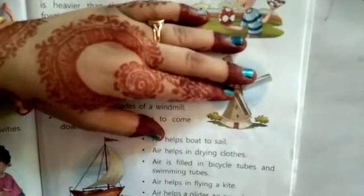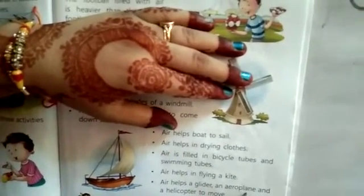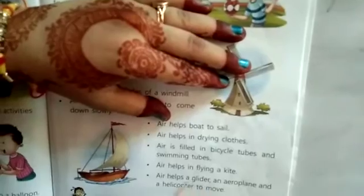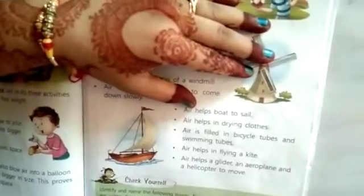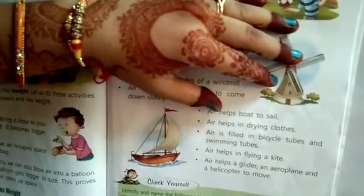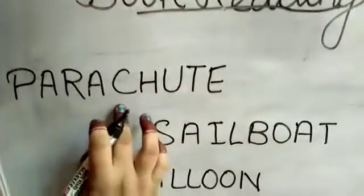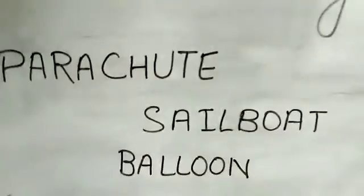Air helps in flying a kite. Air helps a glider, an aeroplane, and a helicopter to move. Next, identify and name the following things — the first and last letter of each are written for you. You can write the spelling: parachute — p a r a c h u t e — and sailboat — s a i l b o a t — and balloon.